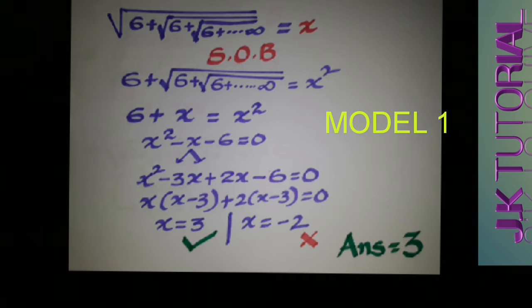We set this expression equal to x. Then we square both sides, so we get 6 plus the square root of 6 plus the square root of 6 plus and so on to infinity, equal to x squared. Since the expression inside is again x, we substitute it: 6 plus x equals x squared.